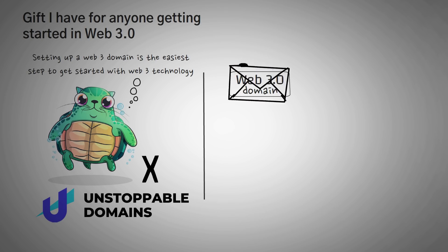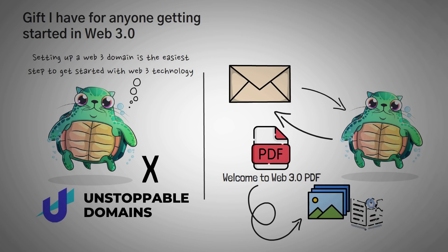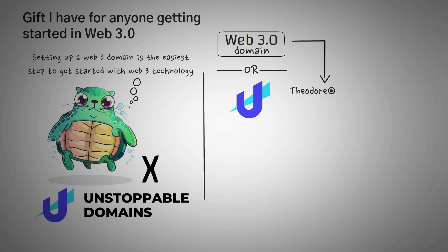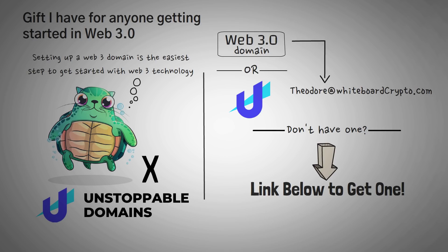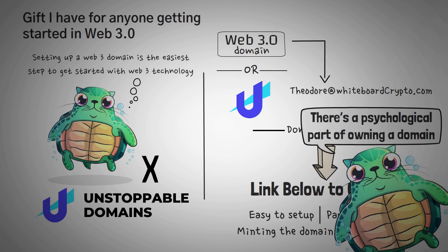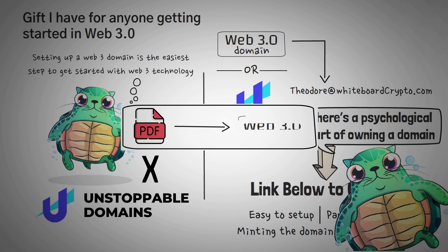If you have a Web3.0 domain and you send it to me in an email, I'll reply with a Welcome to Web3.0 PDF that includes a ton of other questions, pictures, guides, and information. If you already have an Unstoppable domain or even an ENS domain, just email it to theodore@whiteboardcrypto.com. If you don't have one, there's a link in the description to claim one — it's easy to set up, you can pay with crypto, and they've recently added free mints on the Polygon network.